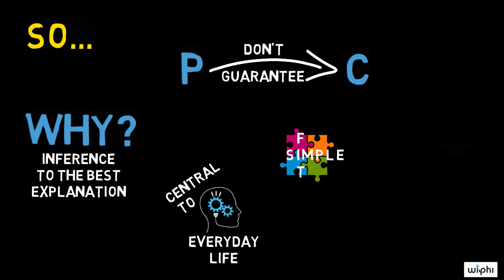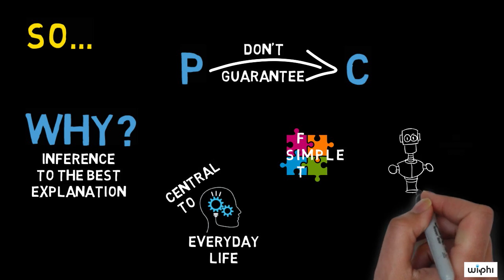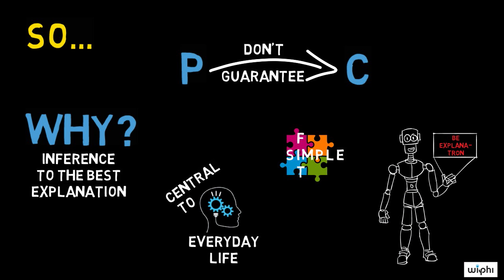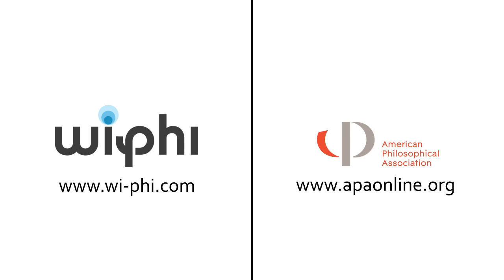And finally, you can challenge an abductive argument by coming up with a better explanation for the premises, or by finding additional relevant evidence that isn't well explained by the conclusion.